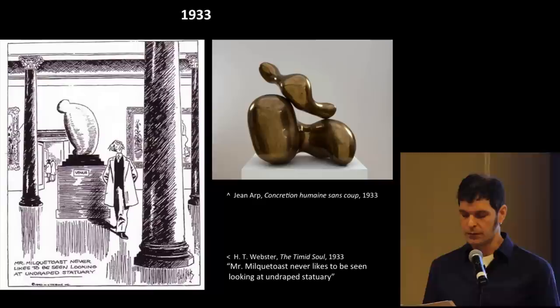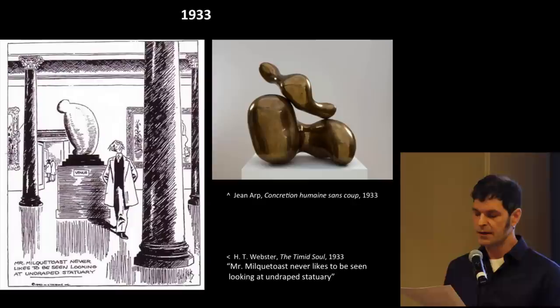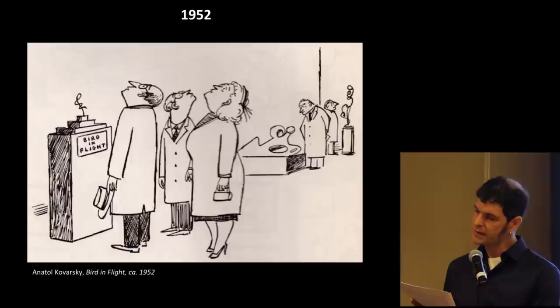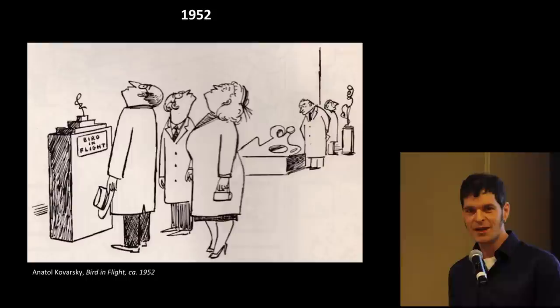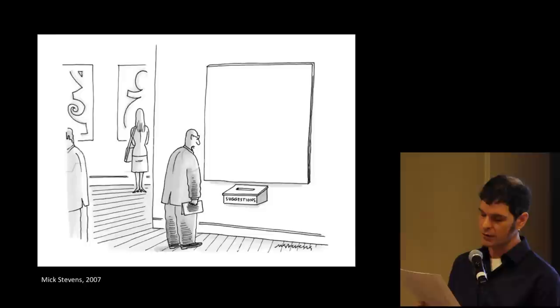The single-panel gag cartoon, which is so familiar today, takes time to evolve. By the 40s or 50s, they reach maturity, and they begin to look a lot like they do today. So anything that can be represented with a single line or gesture becomes the cartoonist's best friend. So modernism is full of easy targets for cartoon mockery. And what could be easier to lampoon than a white canvas? It seems one of Monochrome's chief functions in the world is to be mocked in cartoons.